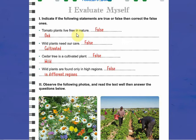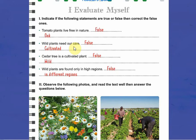Tomato plants live free in nature — of course it's false, since tomato plants are not wild plants; instead they are cultivated plants and need our care. We can say oak instead of tomato. While plants need our care is also false because wild plants don't need our care; we can correct it or say that cultivated plants need our care.